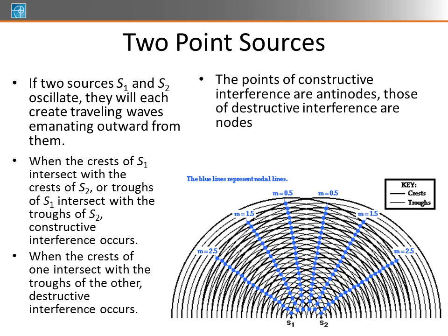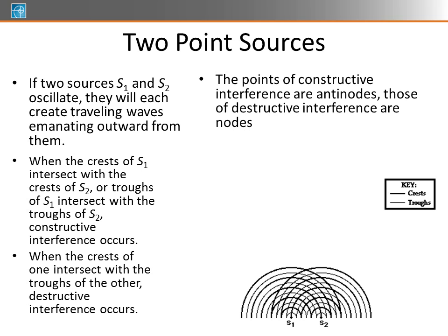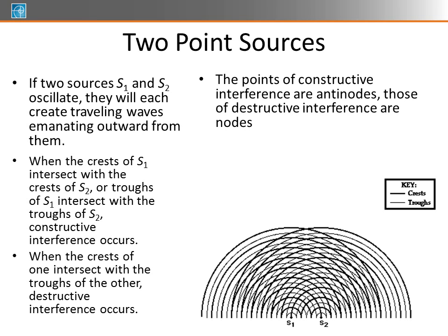An antinode, on the other hand, refers to a point of constructive interference. And this is exactly what we saw when we were doing physics waves in the first physics class.